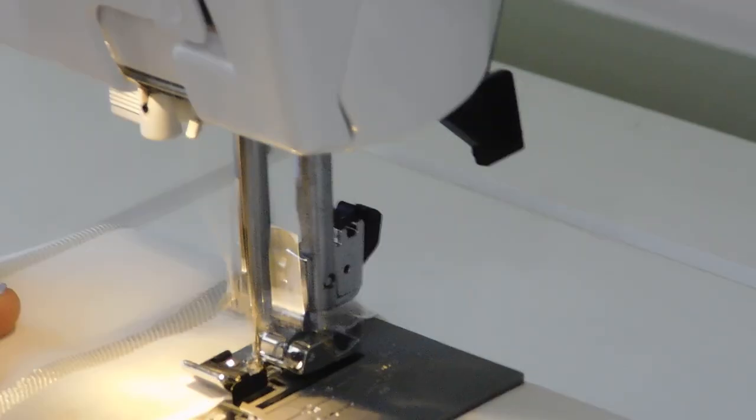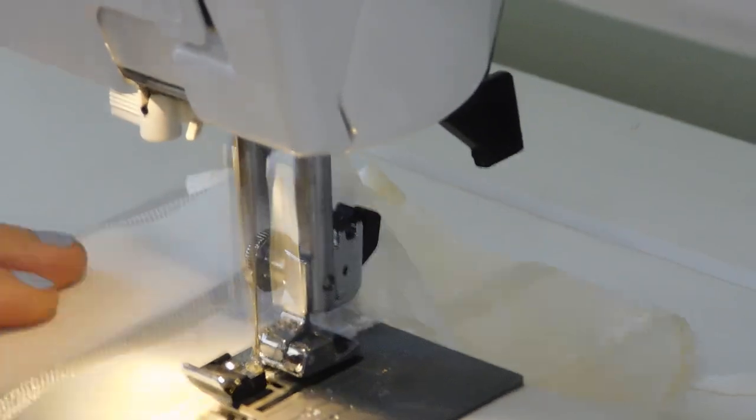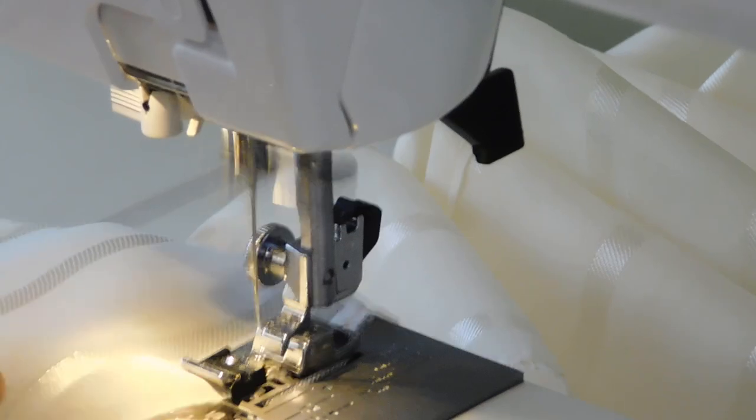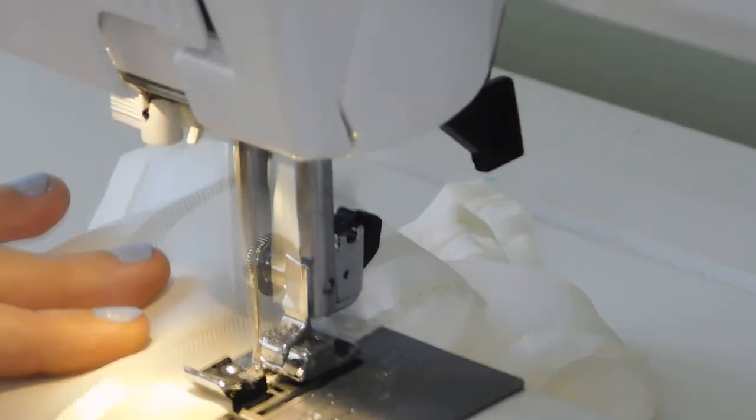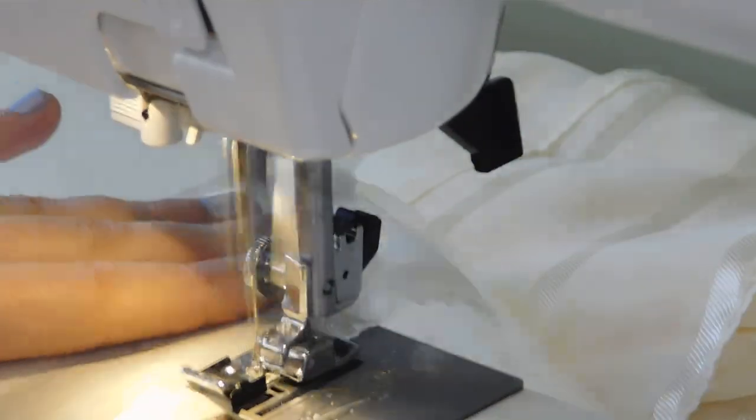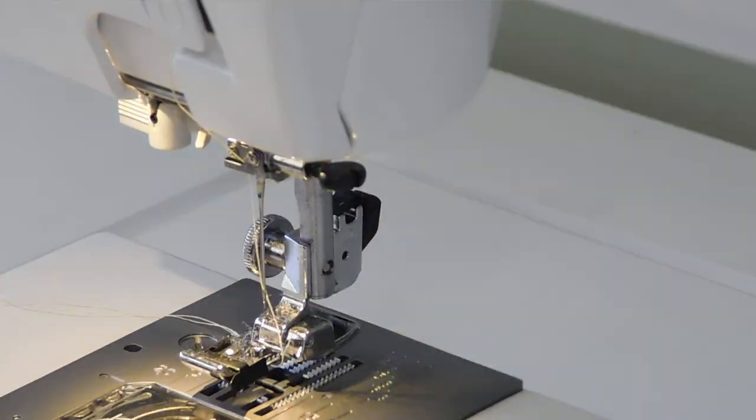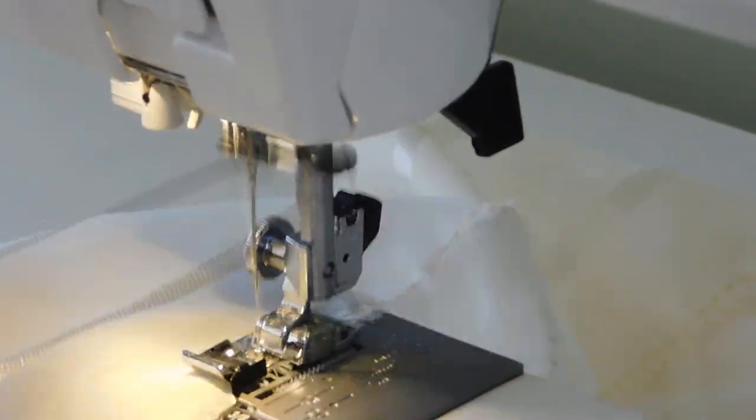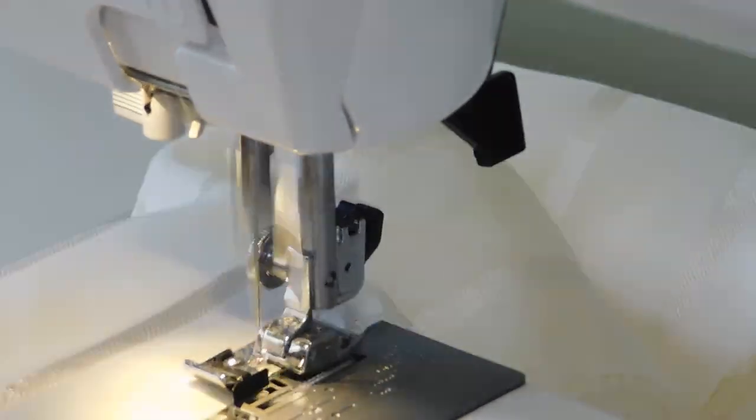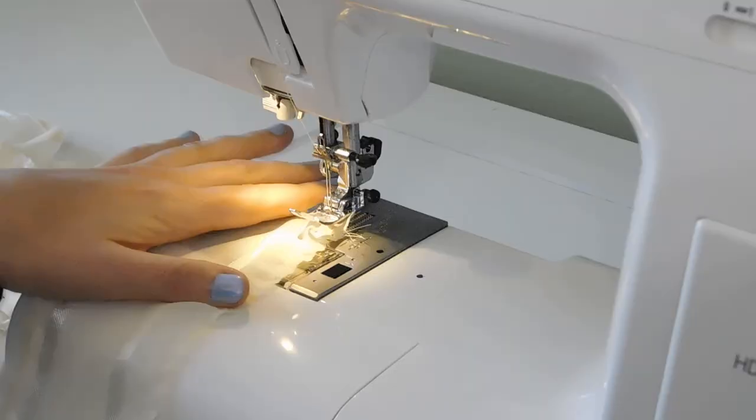Once the top of my ruffles had the overlock stitch on them I mark each ruffle in the middle and two quarters lengthwise so that I could prep for my gather stitches. I chose to hand gather these ruffles because I like how much control I have over the gather placement but in future video tutorials I will show you how to use other methods to gather.